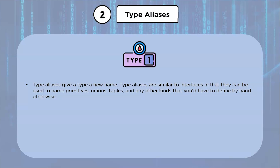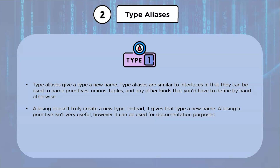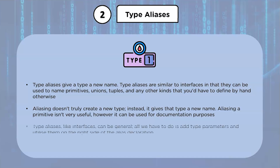Type aliases give a type a new name. They are similar to interfaces in that they can be used to name primitives, unions, tuples, and any other kind you'd have to define by hand. Aliasing doesn't truly create a new type; it gives the type a new name. Type aliases, like interfaces, can be generic — just add type parameters and utilize them on the right side of the alias declaration.